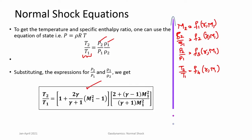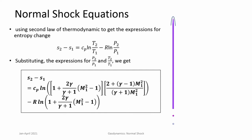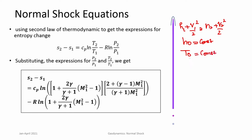Now, how can stagnation quantities be related across the normal shock? The normal shock is an adiabatic process, so there is no heat transfer or work done. This means across the normal shock, the total enthalpy H1 + u1²/2 = H2 + u2²/2, so the total enthalpy H₀ remains constant. For a calorically perfect gas, T₀ does not change — T₀ is constant. This is a very important result: T₀ remains constant across a stationary normal shock in supersonic flow.